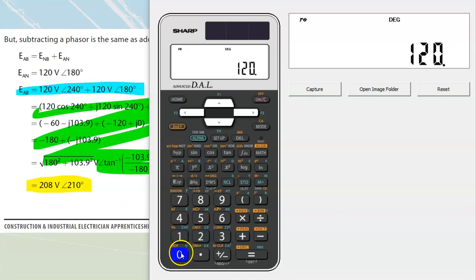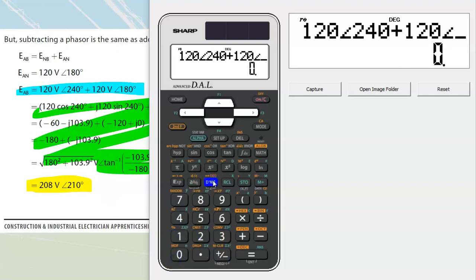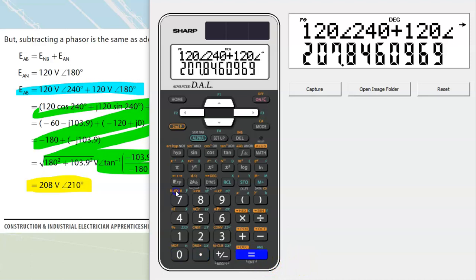We're going to put in 120, and then there's nothing for the volts. We just remember that that's the volts. I need to put in the angle. The angle is right over here above the DMS degrees, minutes, and seconds. So I hit that, 120 volt angle 240, and so that one's entered. Plus 120 angle 180. And once I've done that, I'm just going to hit enter or equals, and it spits out a number.